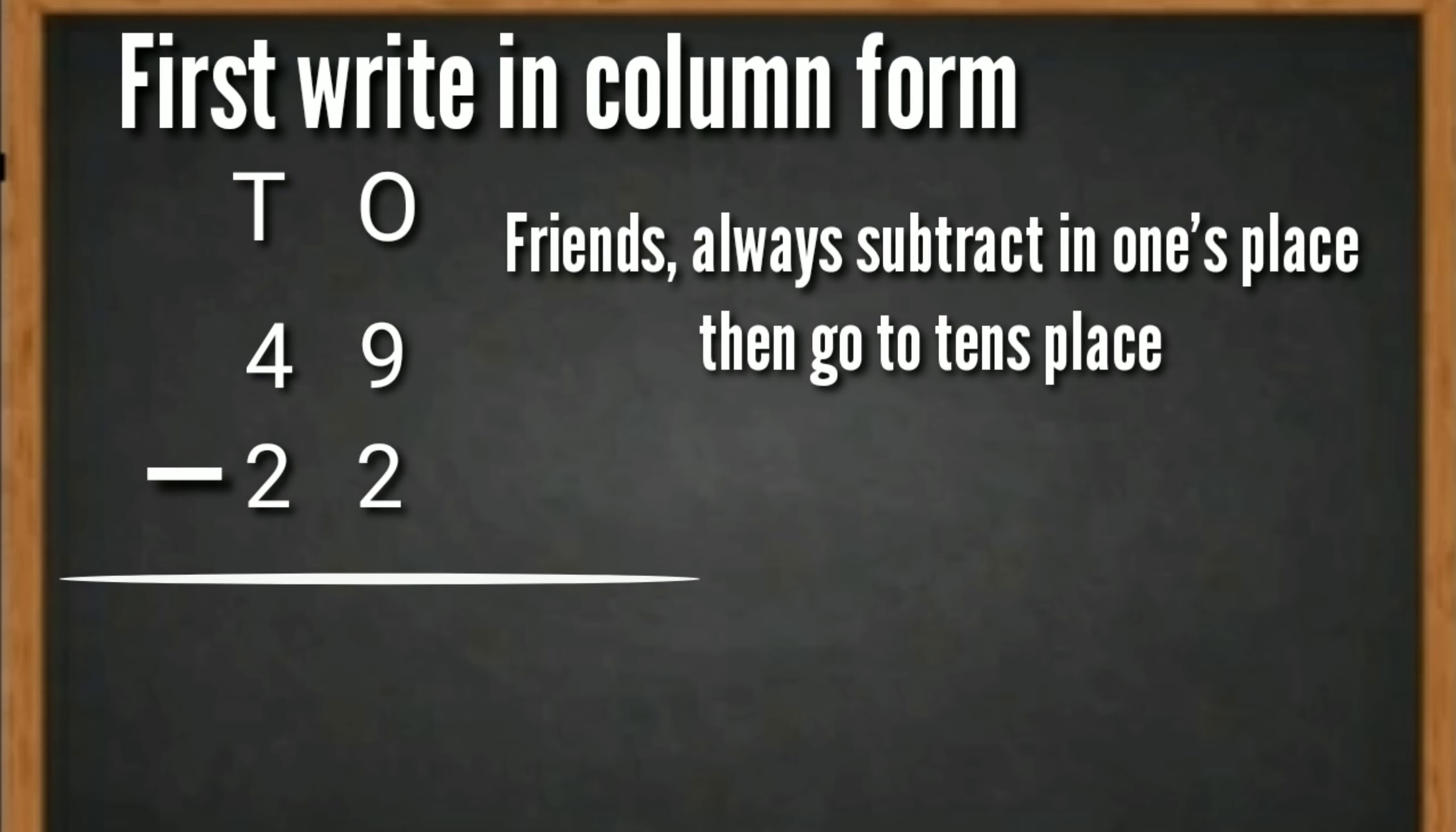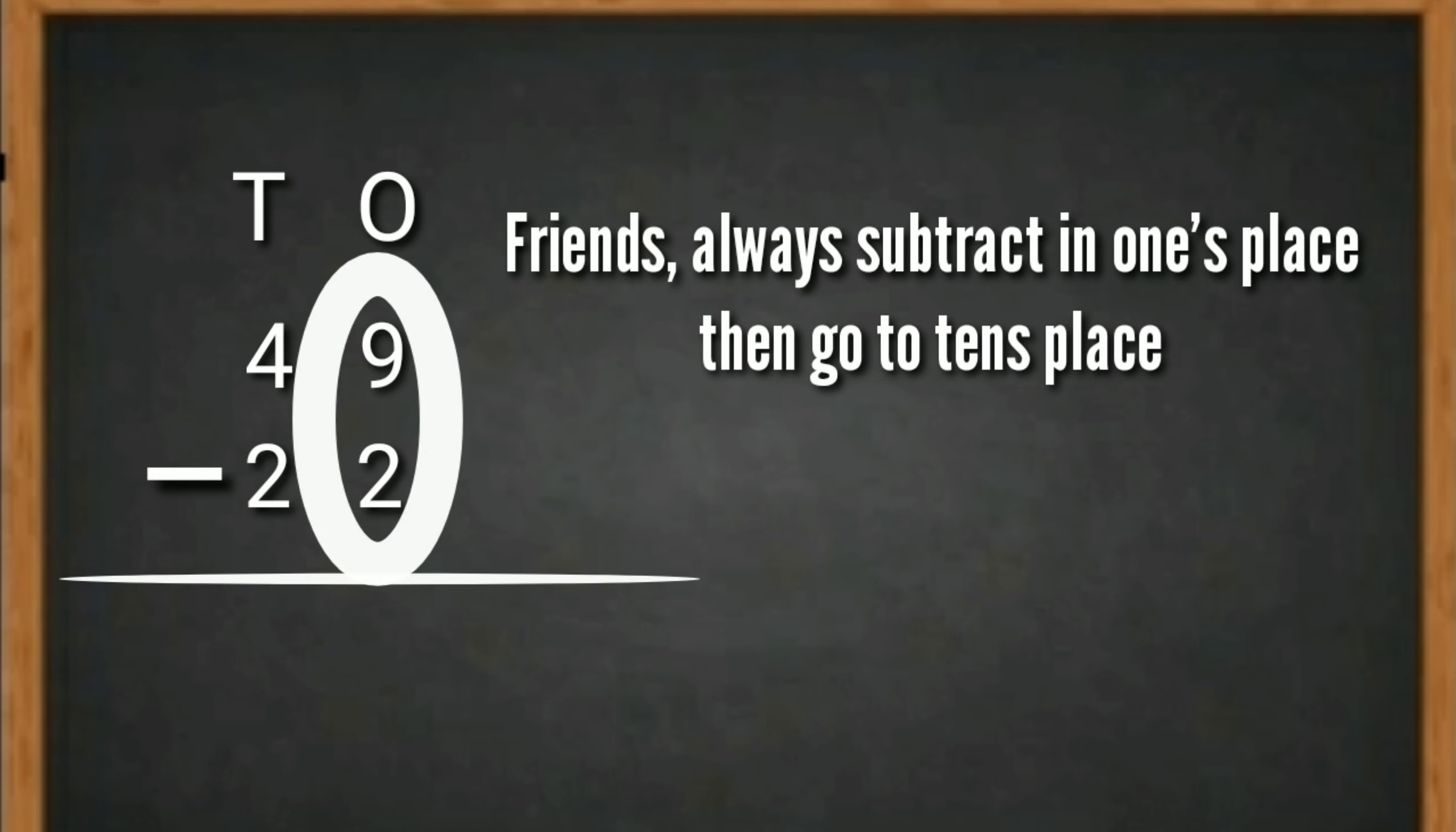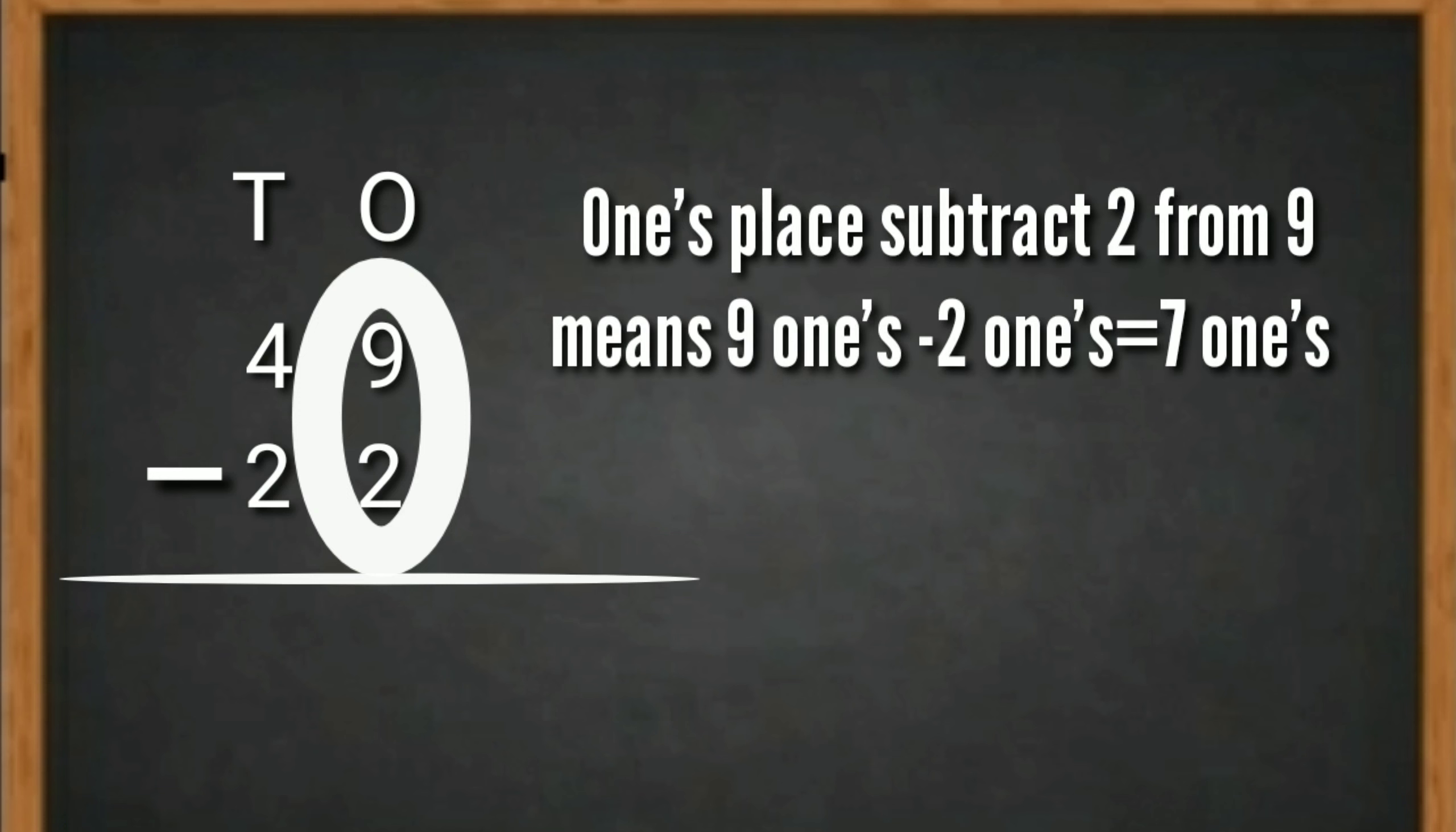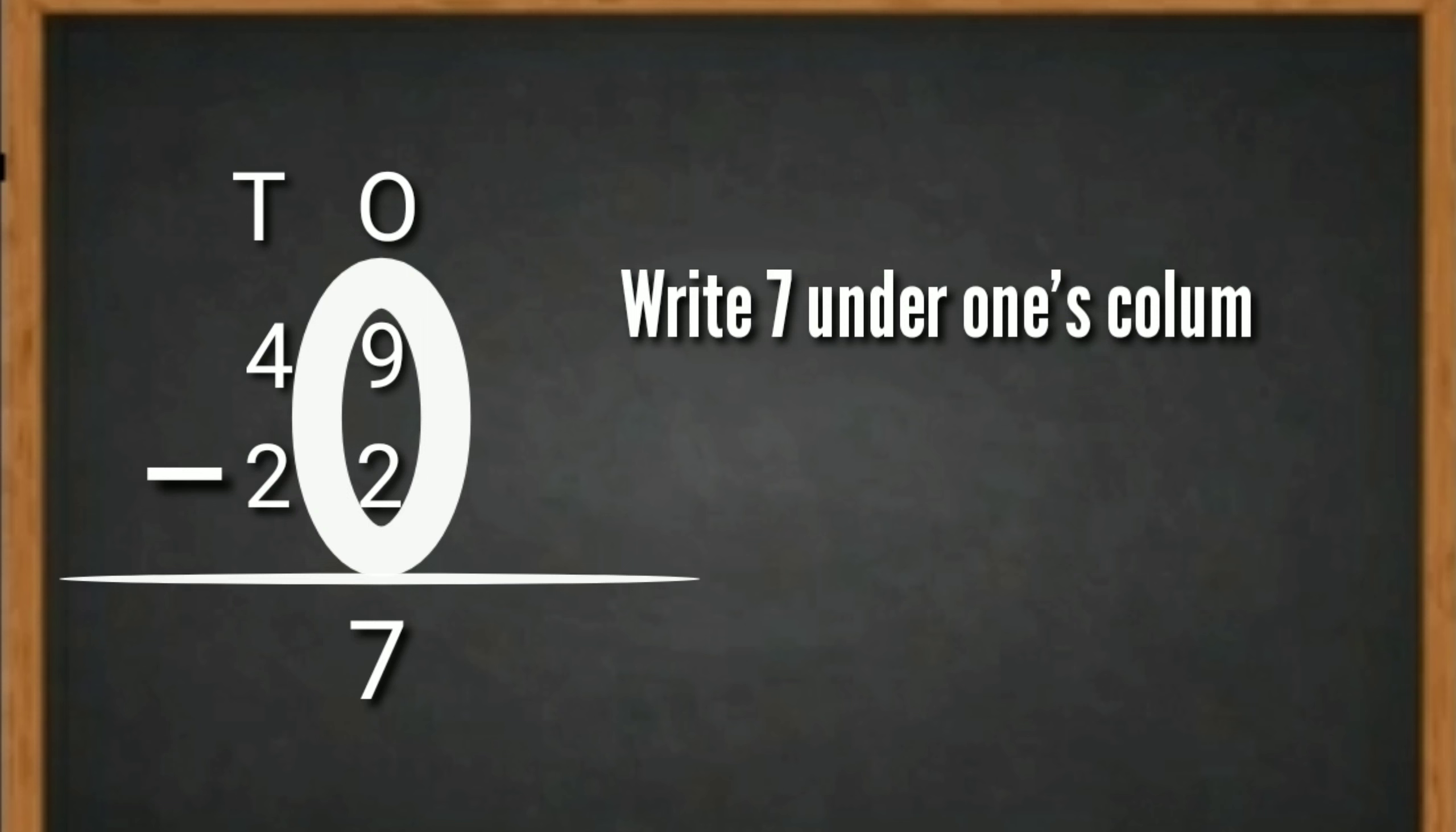First writing column form. Friends, let's subtract in one's place, then go to ten's place. In one's place, subtract 2 from 9. Means 9 ones minus 2 ones is equal to 7 ones. Write 7 under one's column.